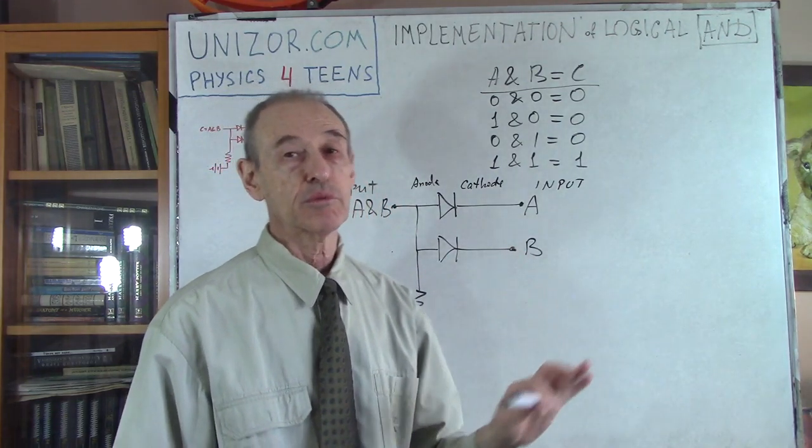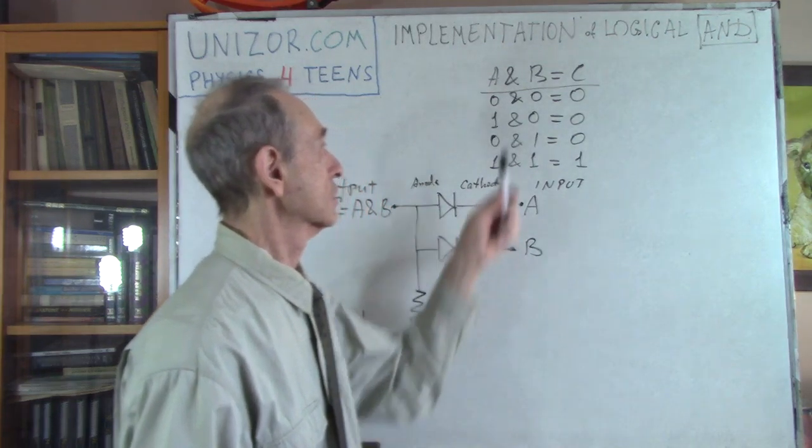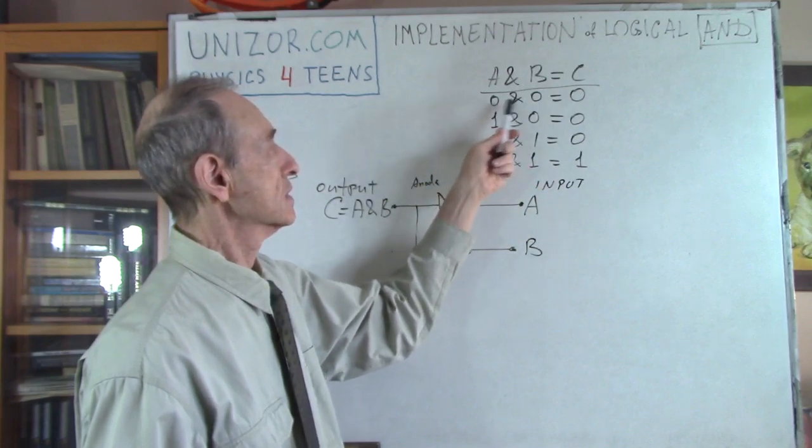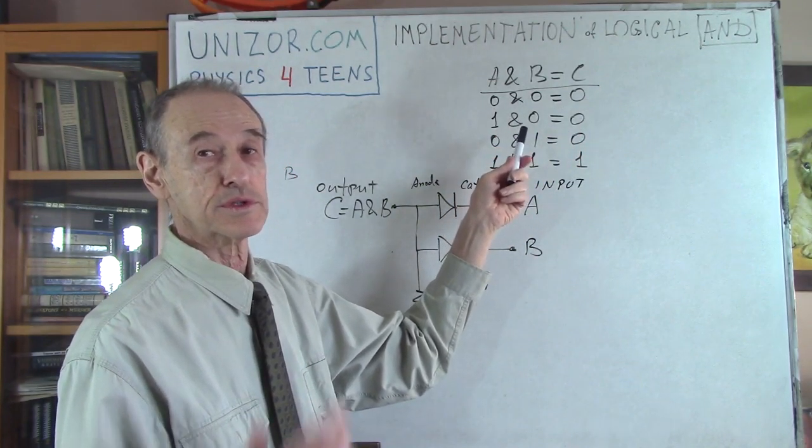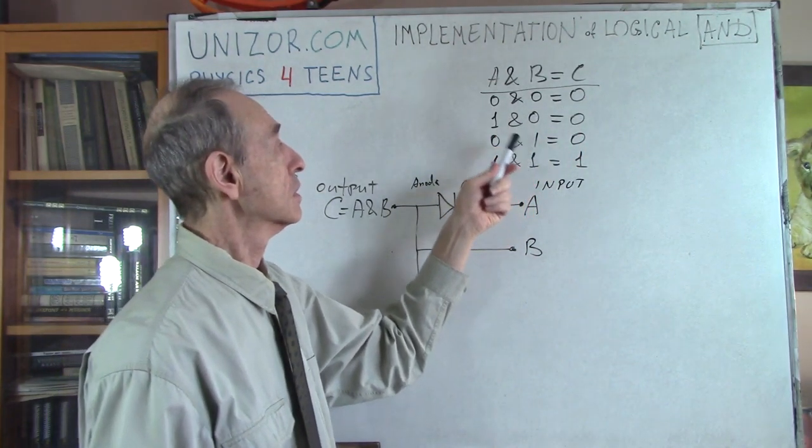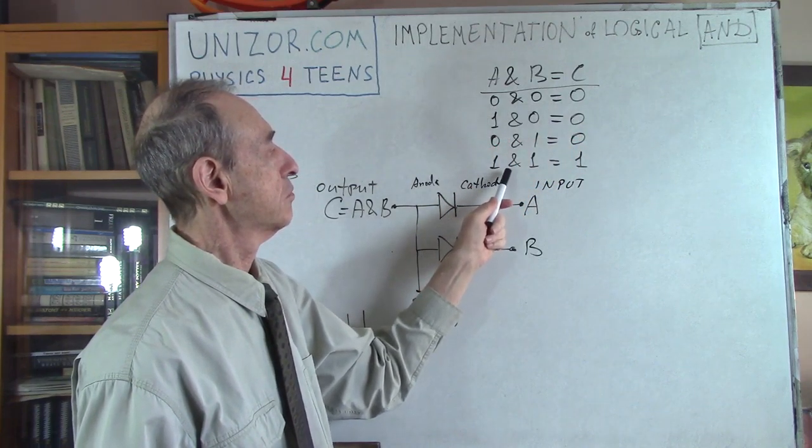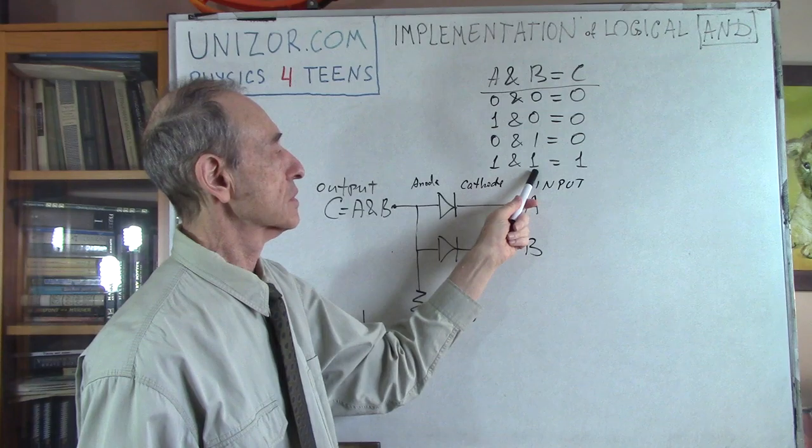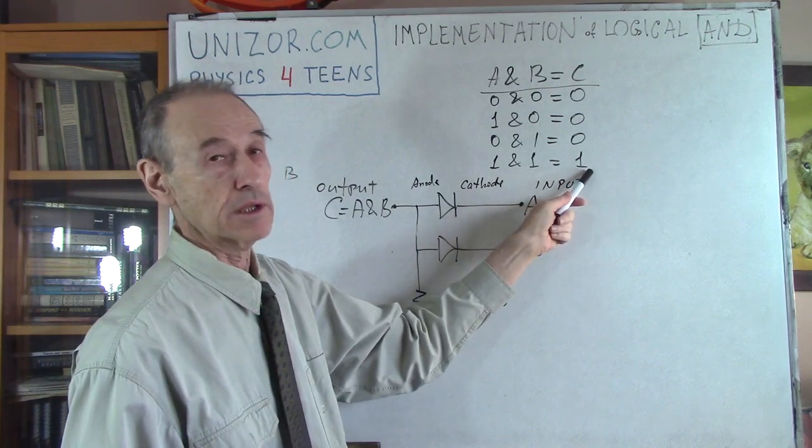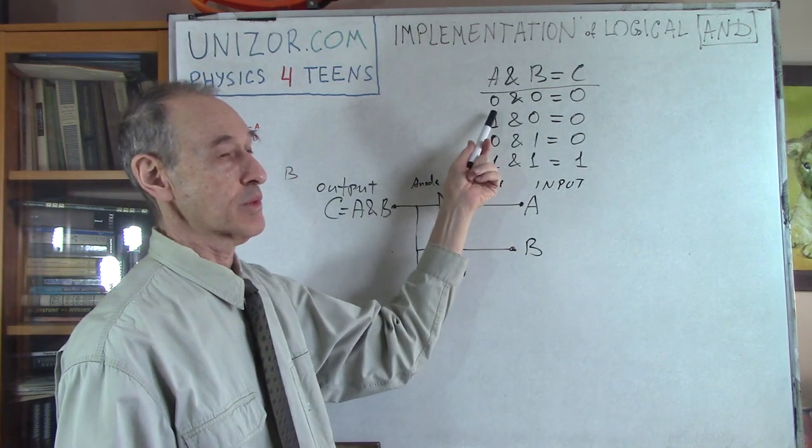First, let me remind you the rules of conjunction. These are the arguments: zero means false, one means true. The rules of conjunction are these. Only if both arguments are true then the result will be true. Just consider it this way.